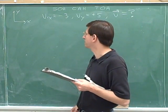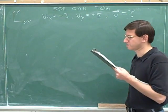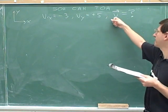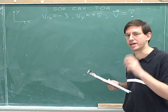Here's our next problem. We're given that v sub x is negative 3, v sub y is positive 5, and the question is asking you to find the overall vector. Please pause the video and attempt that problem.